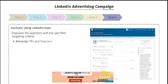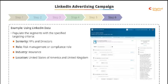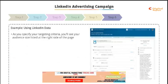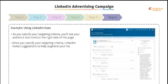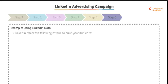Seniority: VPs and Directors. The role is anyone working in a risk management or compliance capacity. Industry: we're looking at the insurance sector. Our location is the United States of America and the United Kingdom. And the company size: we're looking at large enterprise organizations. As you specify your targeting criteria, you'll be able to see your audience size listed on the right-hand side of the page. LinkedIn will also begin to make suggestions to help you augment your list, and offers a wide scope of criteria to build your audience from.